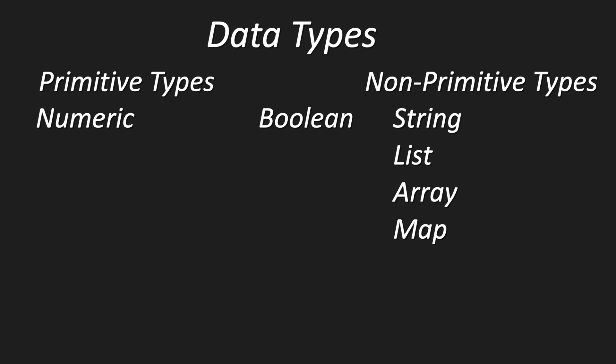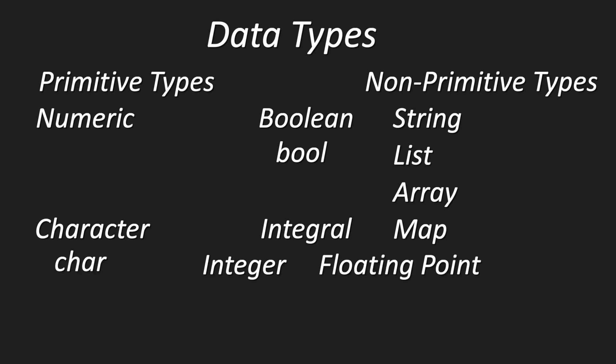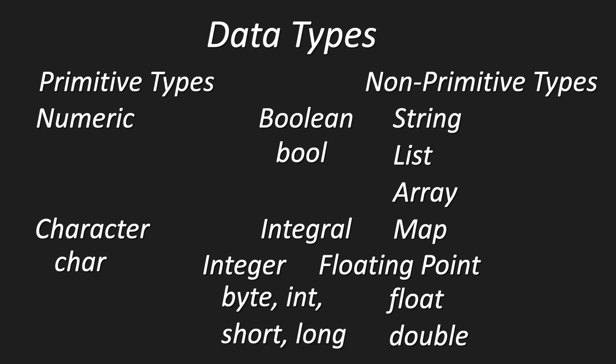Among primitive data types, we further distinguish between numeric data types and boolean data types. Boolean data types are pretty easy — they just hold a 0 or a 1, or a true and a false value. Among numeric values, we distinguish between character types and integral types. Character types have only one data type in Java: char. Internally these are just numbers, which is why they fall under numeric values. In integral data types, we distinguish between integer values and floating point values. Floating point values are float and double, and integer values are byte, int, short, and long.